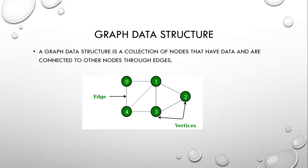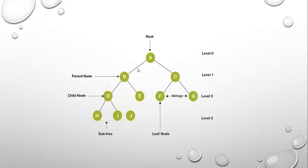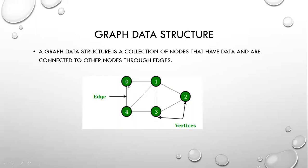Then Graph Data Structure. A graph data structure is a collection of nodes that have data and are connected to other nodes through edges. Here 0, 1, 2, 3, 4 are the vertices, and these are the edges. In a graph we can have more than one edge connecting vertices. But in trees, nodes are connected with only one edge to one vertex. In a graph, a vertex can connect to multiple other vertices — for example, vertex 1 is connected with vertices 4, 3, 2, and 0.